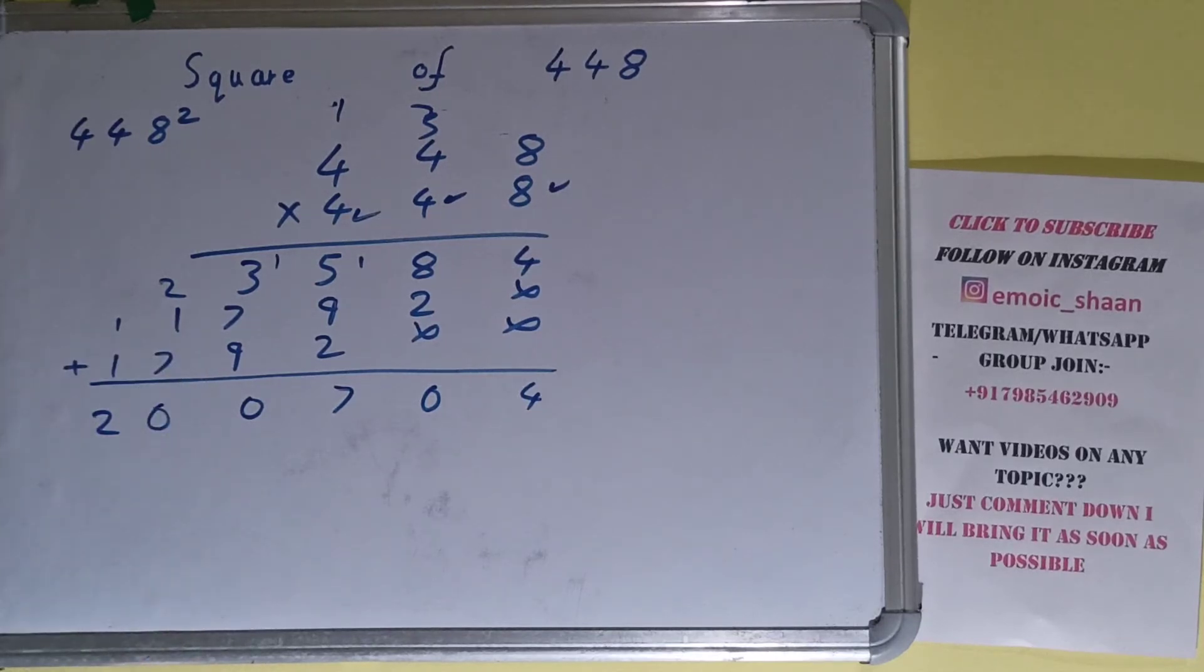Okay, so the answer will be 200,704. That will be the square of the number 448. So this is all.